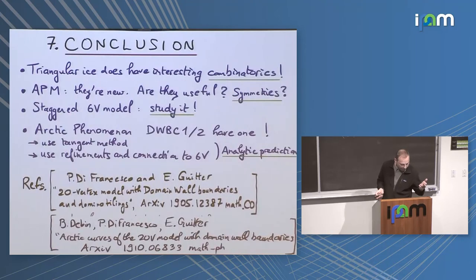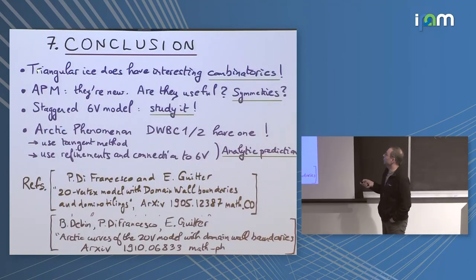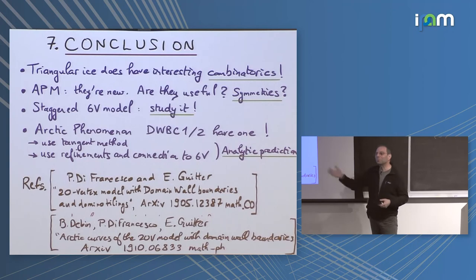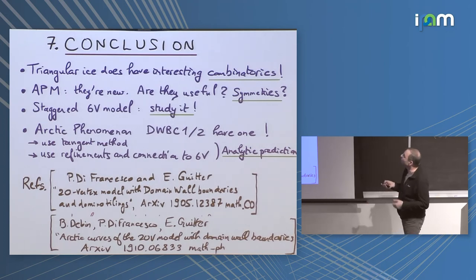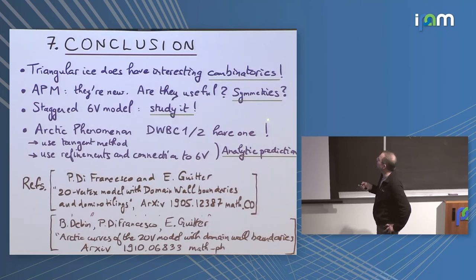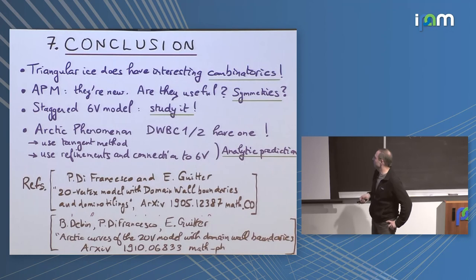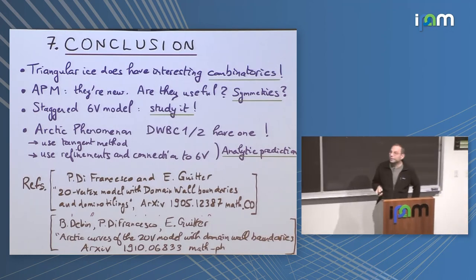The conclusion is that unlike what people dismissed after Baxter showed that the free energy for the six-vertex model made the question about the Arctic phenomenon uninteresting from a statistical mechanics point of view, we have basically answered that question for this case. Thank you.